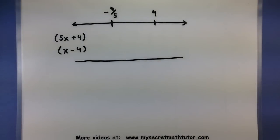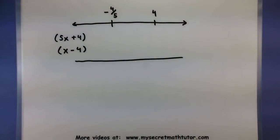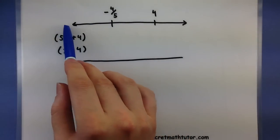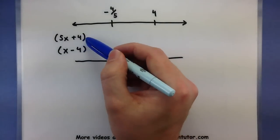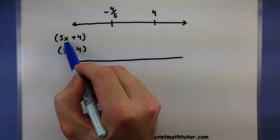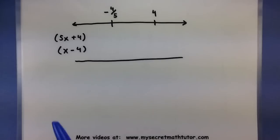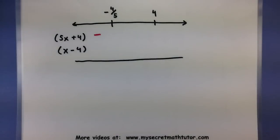Let's grab something in the first interval — anything from negative infinity up to negative 4/5. Let's choose negative 2. When you plug negative 2 into the first factor 5x + 4: negative 2 times 5 is negative 10, plus 4 gives negative 6. Go ahead and record the sign — that's the important part.